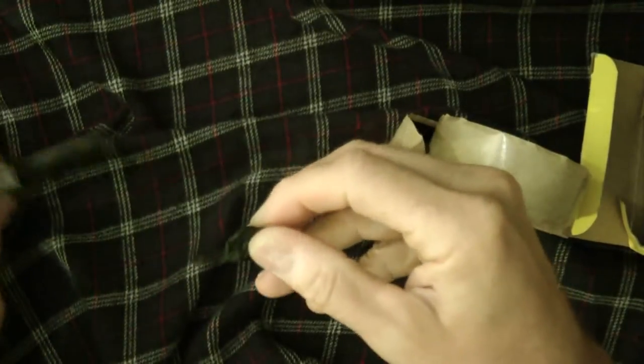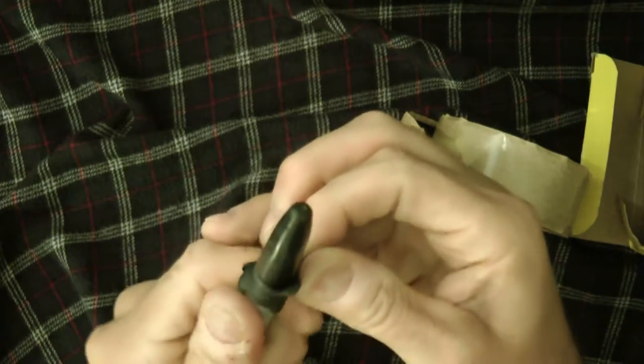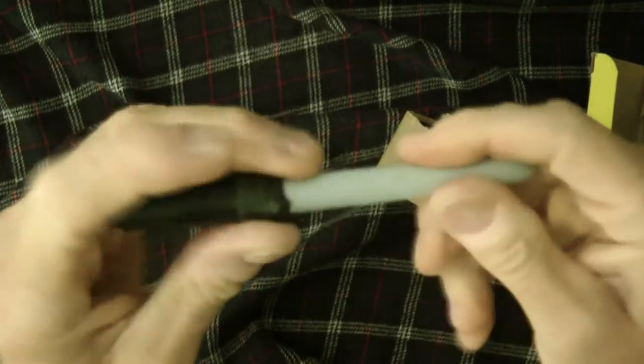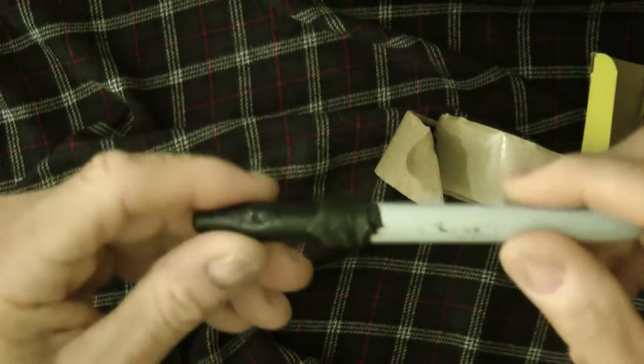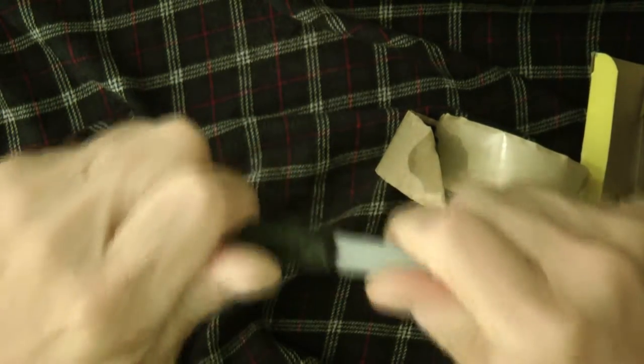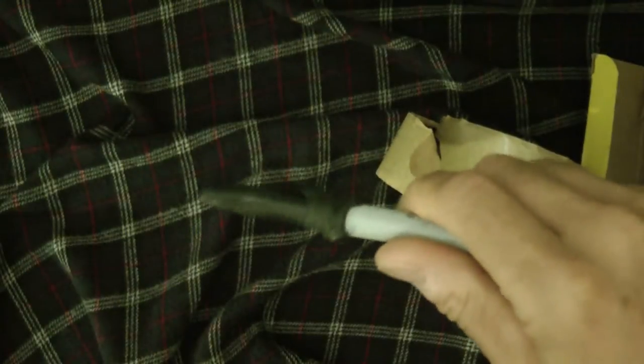Then you just peel this and you wrap it like this, and it wraps really tight. See that? That would seal up. You could rub it - that'd be nice and tight.